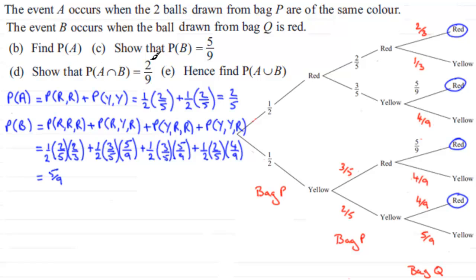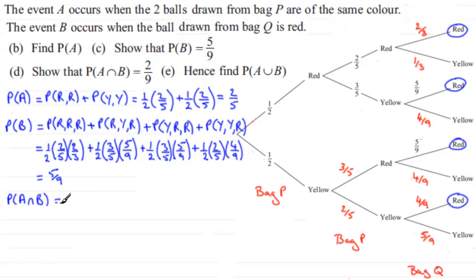In part D we need to show that the probability of A intersection B equals two ninths. The intersection means we're looking for both events to occur. Event A requires two balls drawn from bag P to be the same color, and event B requires the ball drawn from bag Q to be red.